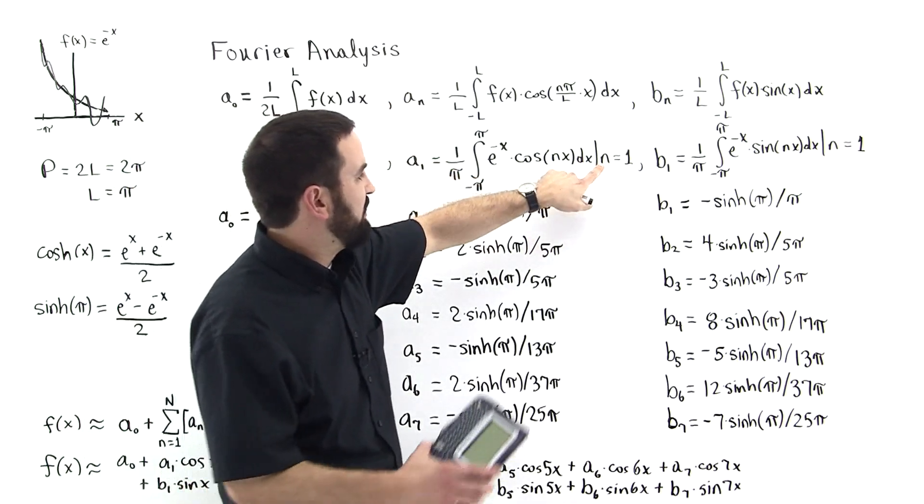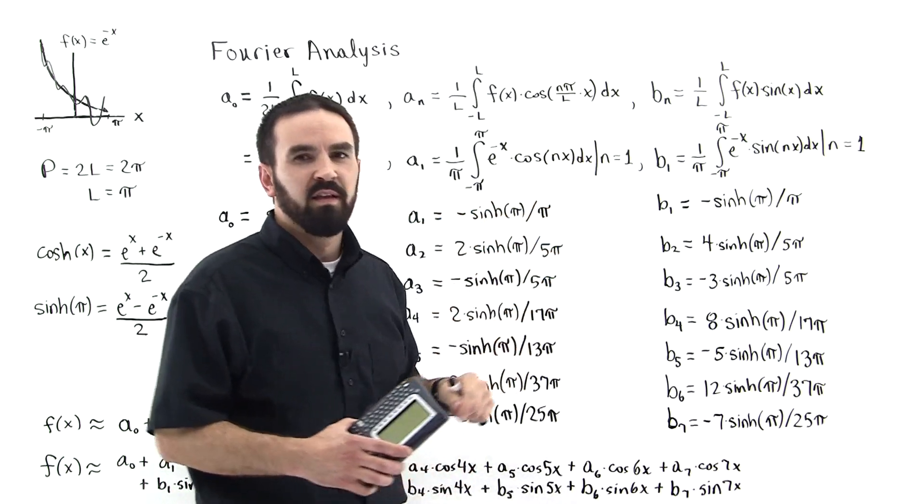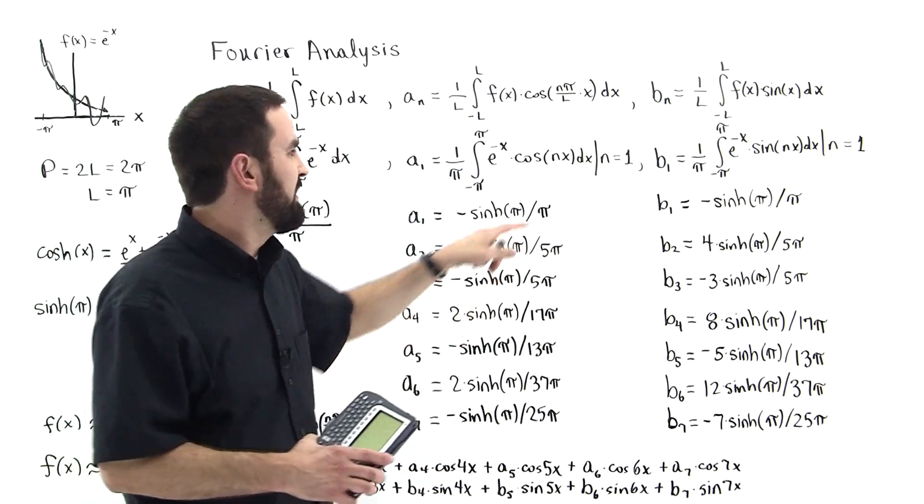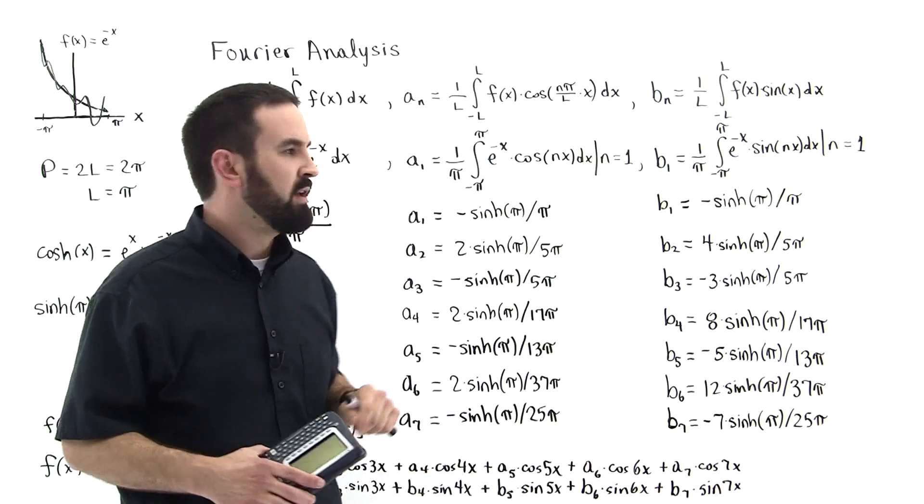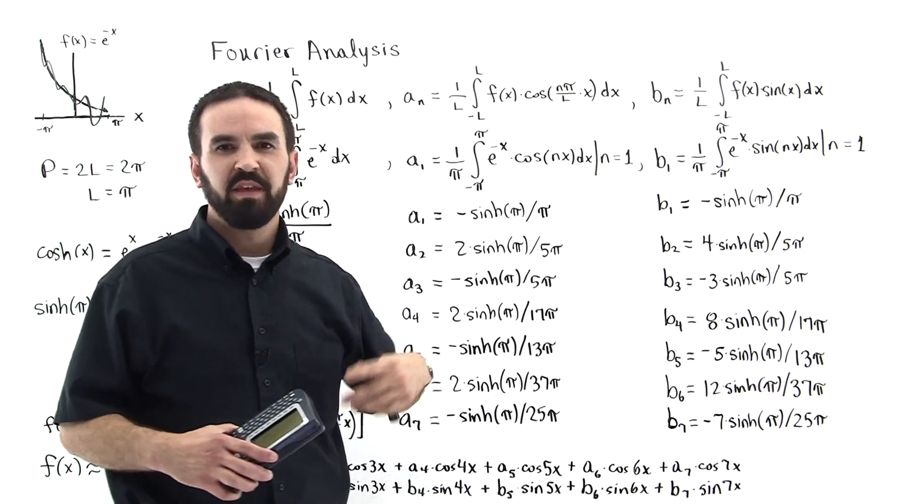And then I put the evaluation bar and I let n equal 1, enter. Bring it back into the editor, let n equal 2, enter. Bring it back into the editor, let n equal 3, and so on.